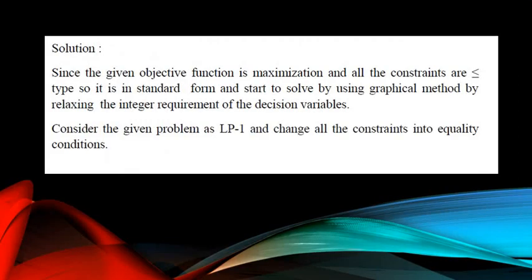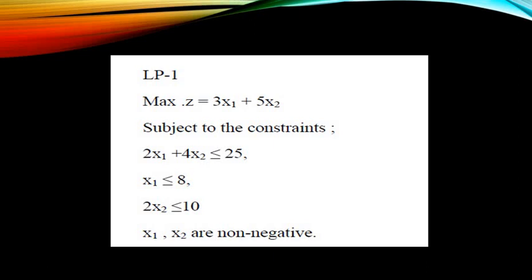Since this is a pure integer linear programming problem, all decision variables must be assigned only integer solutions. The objective function is a maximization type and all constraints are less-than-or-equal-to type, so it is already in standard form. First, we convert the three constraints into equality conditions by relaxing the integer requirement and solve using the graphical method, taking the given problem as LP1: maximize Z equal to 3x1 plus 5x2, subject to 2x1 plus 4x2 ≤ 25, x1 ≤ 8, and 2x2 ≤ 10, where x1 and x2 are non-negative.